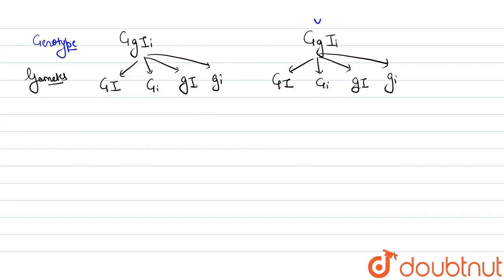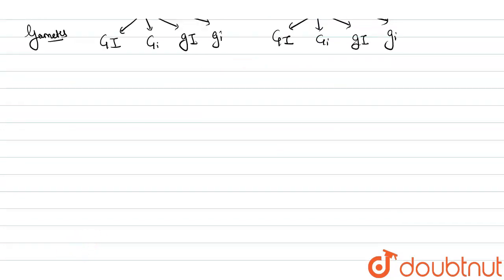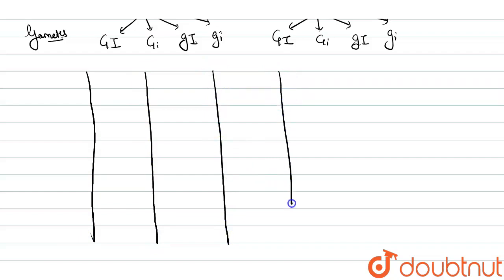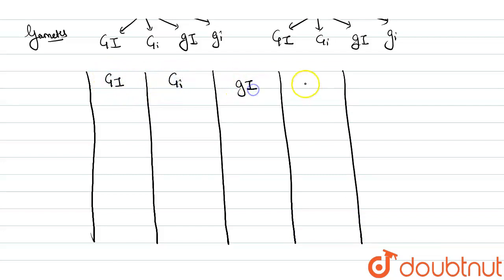We draw the Punnett square to make the study easy and to calculate the ratio easily. On the first side we write the four gametes of one parent, and on the second side we write the four gametes of the other parent. These are the gametes because we have to self-pollinate between these two parents.